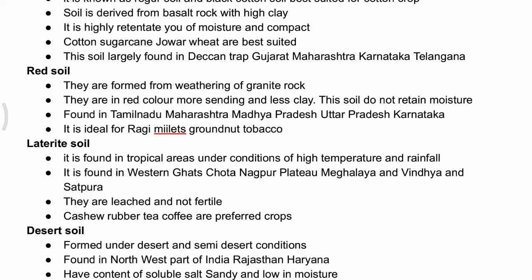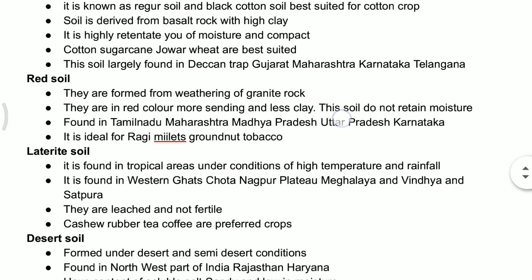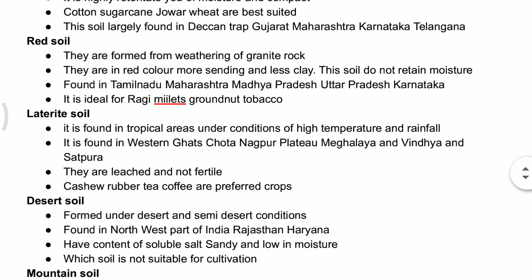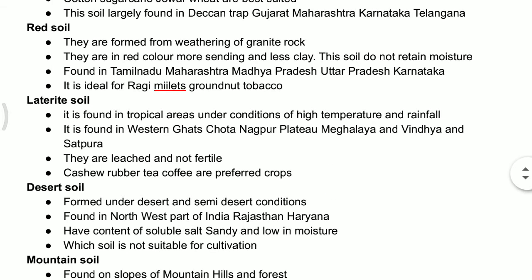Red soil has very less content of clay and very less content of humus. One more drawback is that this soil does not retain moisture for a long time — it doesn't hold water for a longer period. This soil is found in Tamil Nadu, Maharashtra, Madhya Pradesh, Uttar Pradesh, and particularly South Karnataka. This soil is ideal for ragi, millets, groundnut, and tobacco.